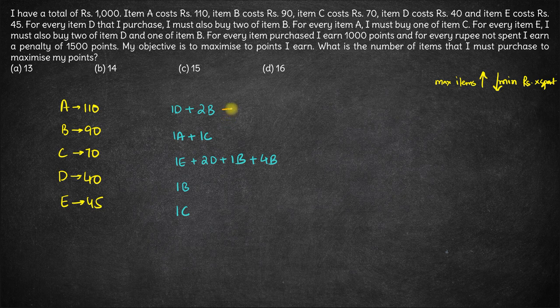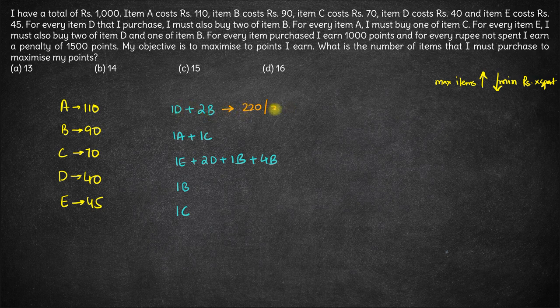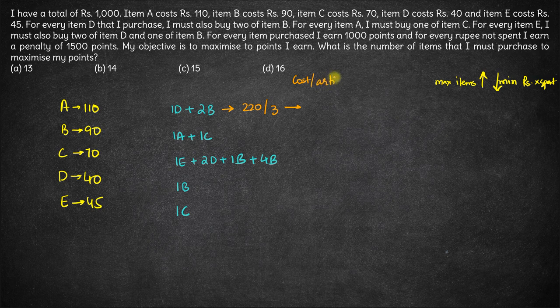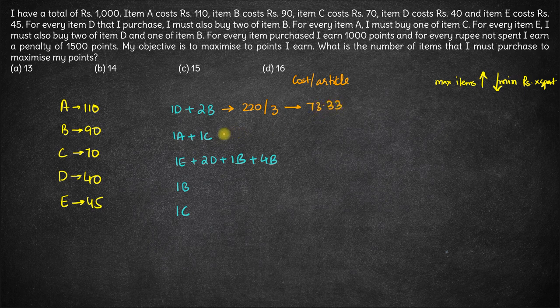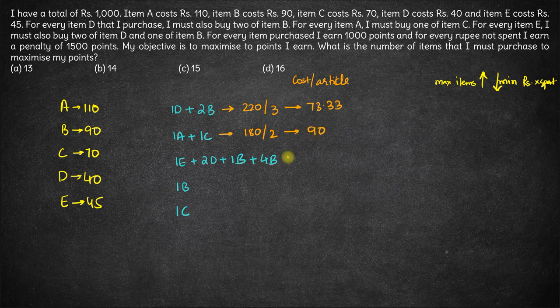Let's calculate the price per item here. So one D costs 40 and two B costs 180. So 180 plus 40 is 220. So the total cost is 220 but for three articles. So cost per article here is 220 by 3 which is approximately 73.33. Here if you buy one A and one C you'll have 110 plus 70, 180 total cost for two articles, hence 90 rupees per article.